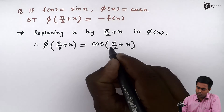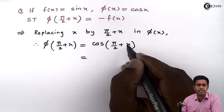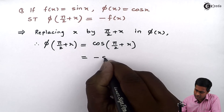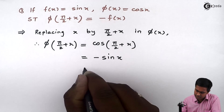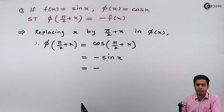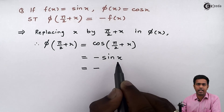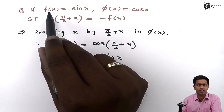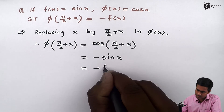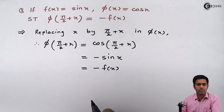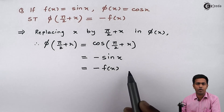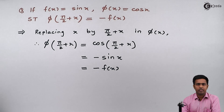Now we all know that cos of pi by 2 plus theta is minus sin theta. So here it will become minus sin x. Keeping the minus as it is, the term sin x is exactly equal to f of x. So I can replace sin x by f of x, and hence we get phi of pi by 2 plus x equal to minus f of x, as required. Thank you.